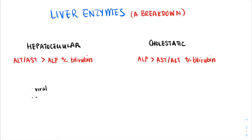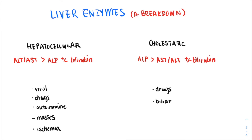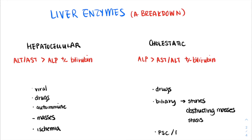Understanding different patterns of elevation helps us generate a differential diagnosis. For hepatocellular elevation patterns, common etiologies include viral causes, drugs, autoimmune conditions, space-occupying masses, and ischemia. When we look at a cholestatic pattern, we more commonly see drugs, biliary pathology including stones, obstructing masses, or stasis, and specific conditions such as primary sclerosing cholangitis or primary biliary cholangitis.